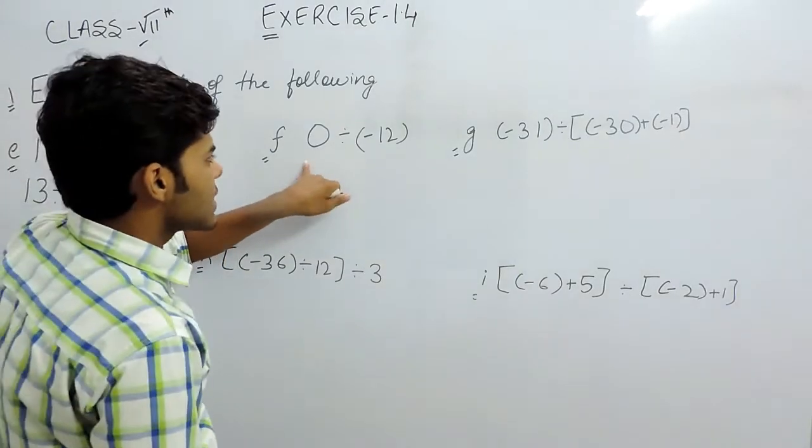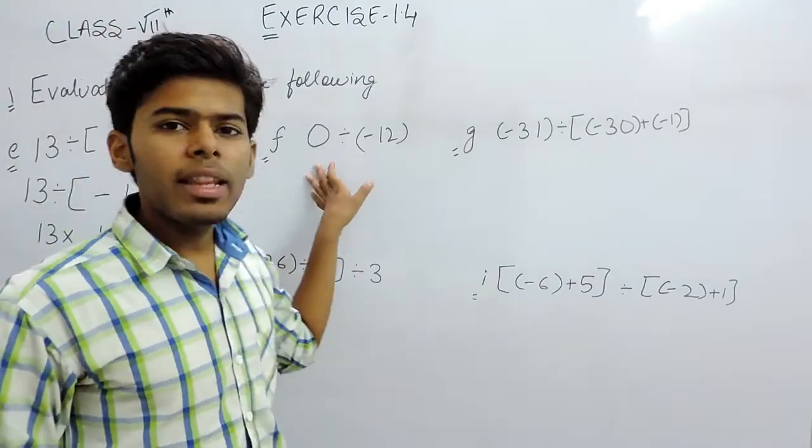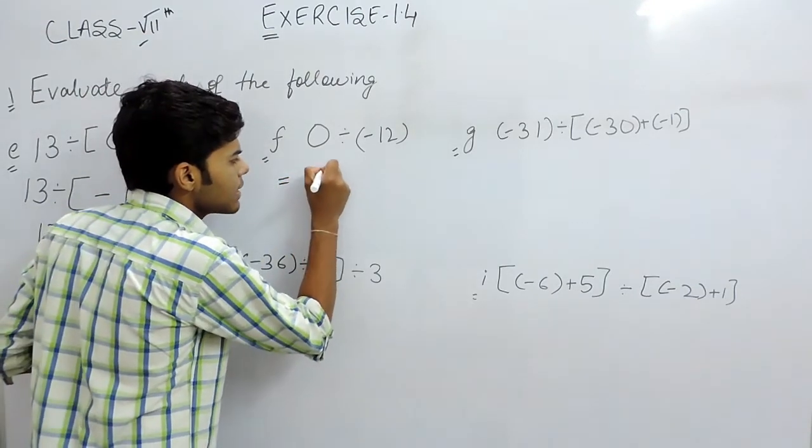Now second part is 0 divided by minus 12. So one more thing is that when 0 is divided with any number present in our number system, the answer will always come as 0.